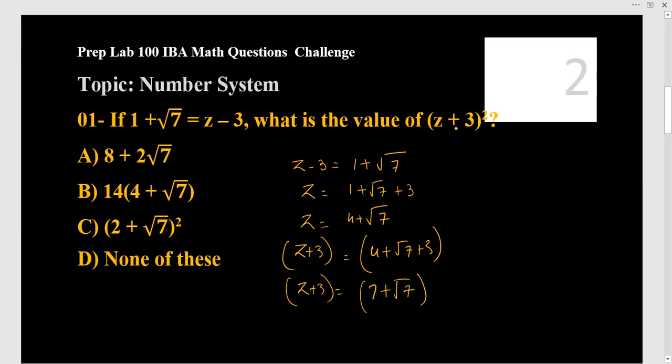And now what they're asking - they're asking for (z + 3)². So square both sides. So (z + 3)² and (7 + √7)². So you know the formula of (a + b)², which is equal to a² + 2ab + b².